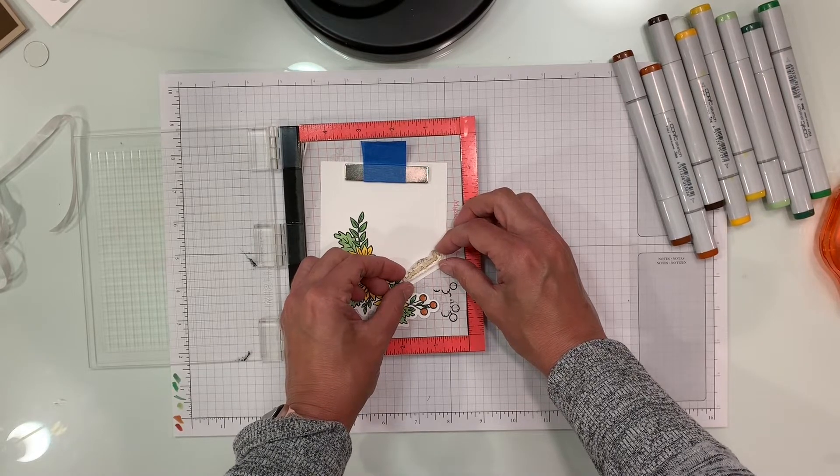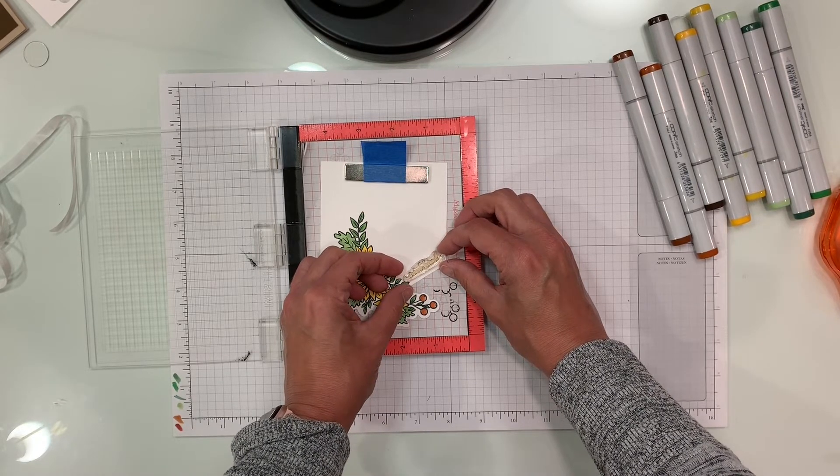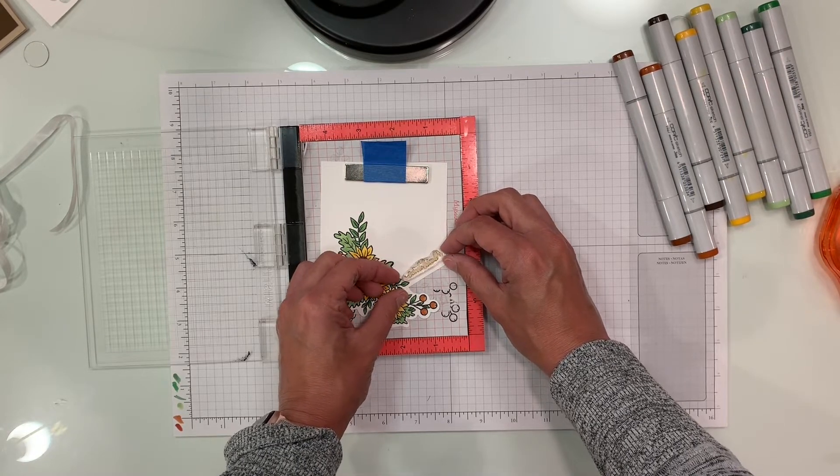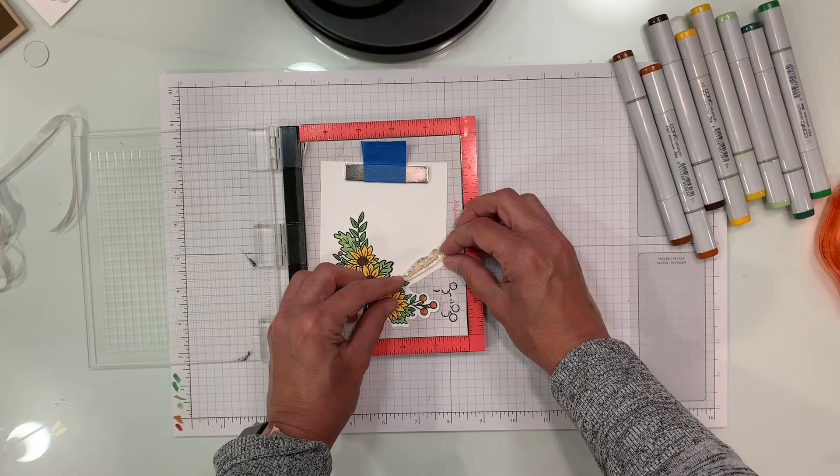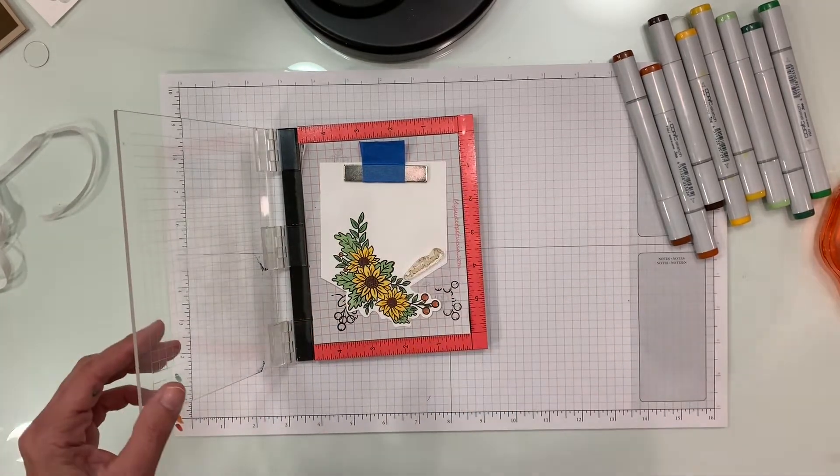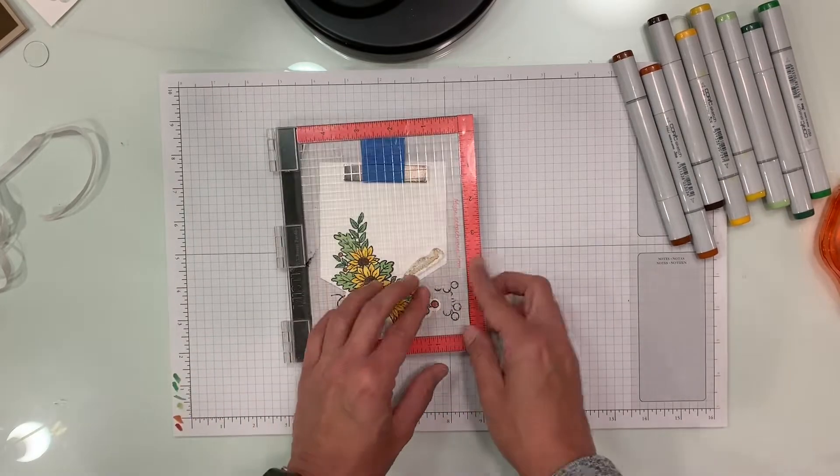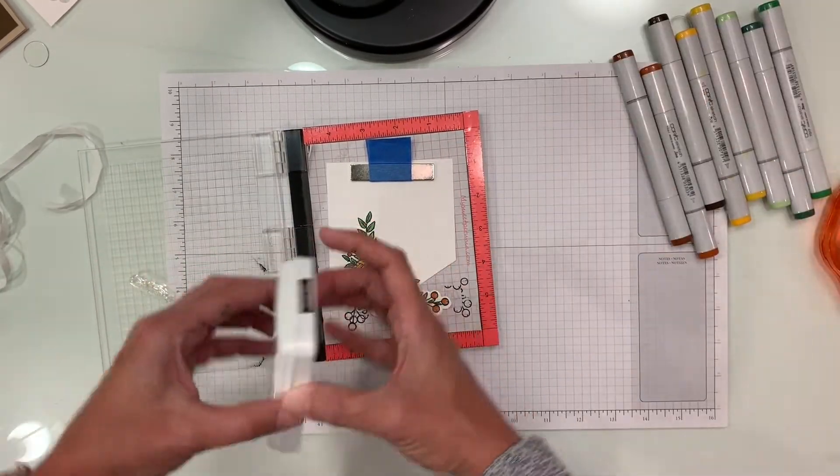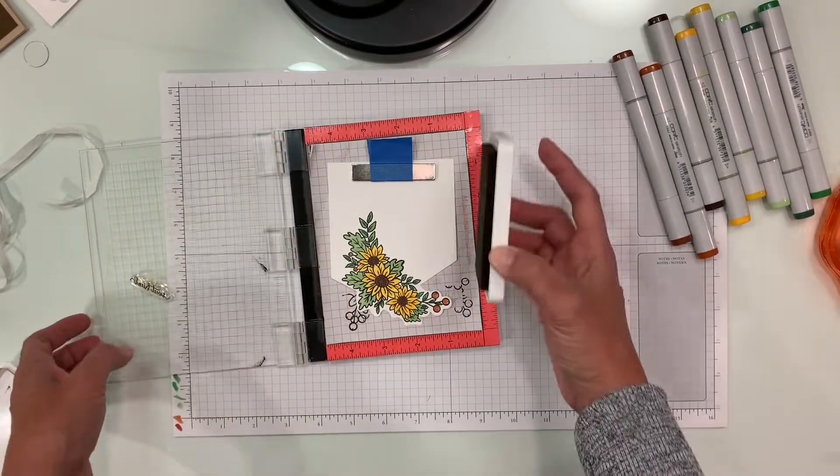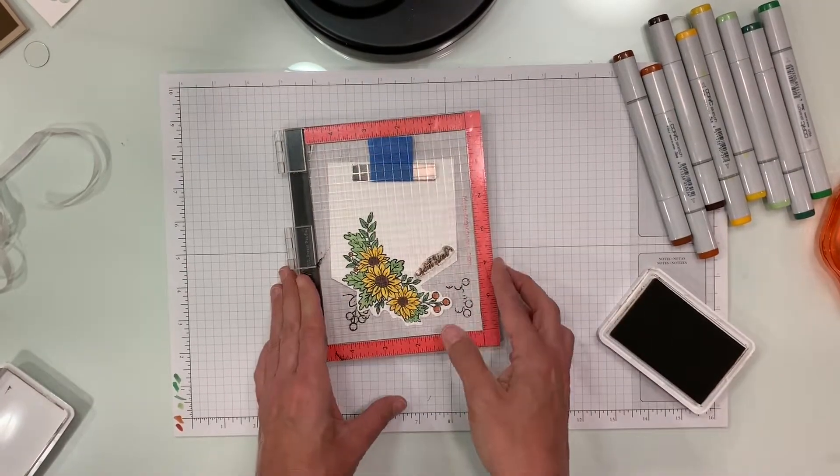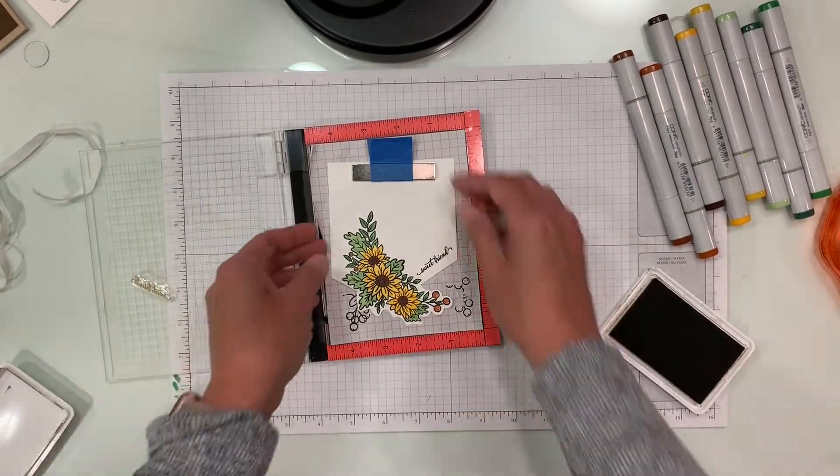We're going to just put Sweet Friend right there. This one is the perfect fit. There's quite a few small sentiments that will work for this—there's a get well, there's a bunch. So it doesn't really matter how you put your paper in as long as your stamp is lined up like that. Then I have some Hazelnut Blend ink and I'm just going to stamp that right like so and you have your perfectly aligned sentiment.